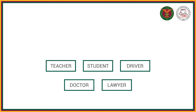For example, we have a teacher, student, driver, doctor, and lawyer. Along the way, we might find that these entities have the same similar attributes — like all of them would have a name, an address, a birthday, sex, and age. But we also want to note that individually, as entities, they also have their own unique attributes.